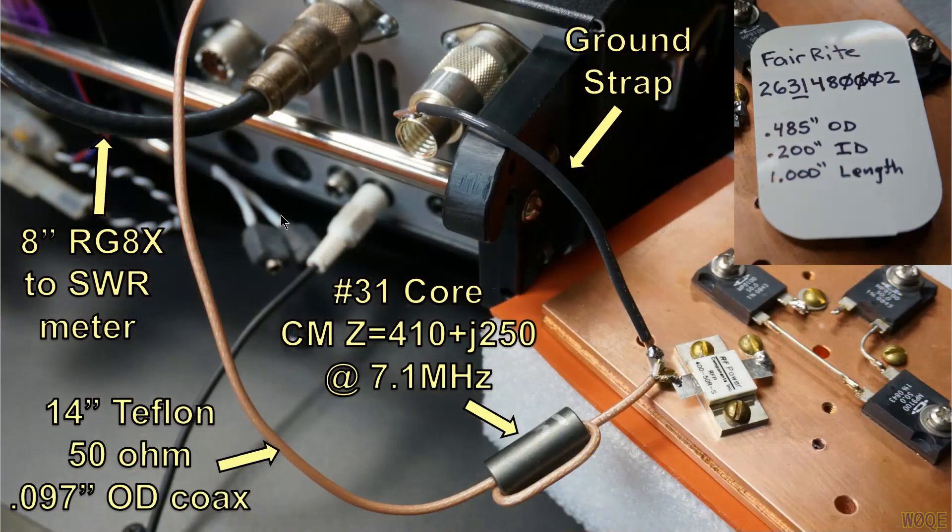Shown here is the setup I used to do the experiment. It consists of a 100 watt HF transceiver. The output has a short piece of RG8X eight inches that goes to an SWR power meter. On the output of that is this small diameter coax, 14 inches long, that wraps with two turns through this core. This core is a ferrite core, number 31 material, 0.2 inch inside diameter.